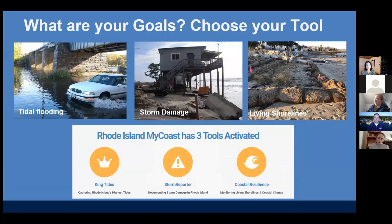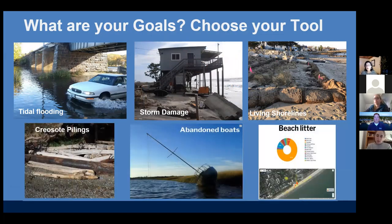In Rhode Island we have three tools activated: the king tides, the storm reporter, and the coastal resilience. In other states there are other tools — creosote pilings, identifying and geotagging them, similarly for abandoned boats and beach litter. This geotagging and collection of photos as well as data could provide broad usage depending upon your goals.